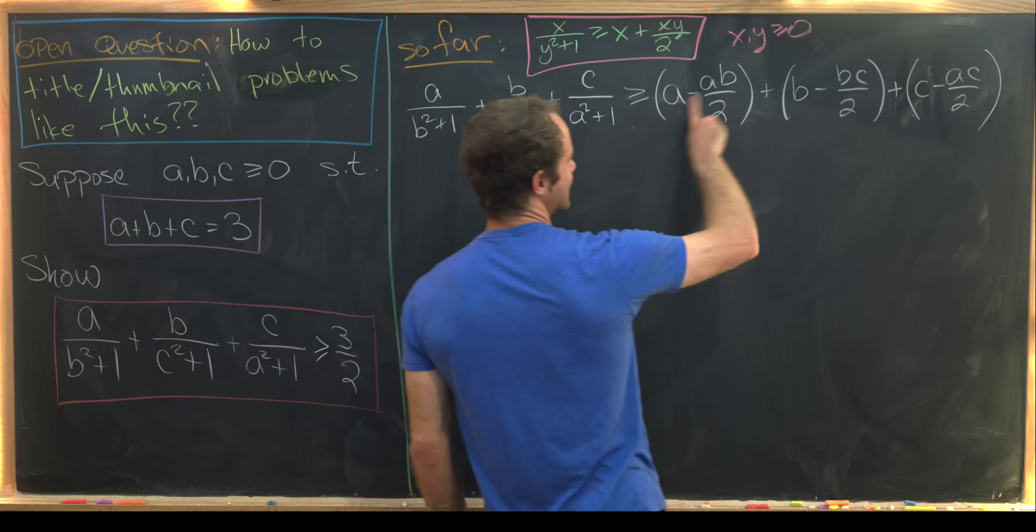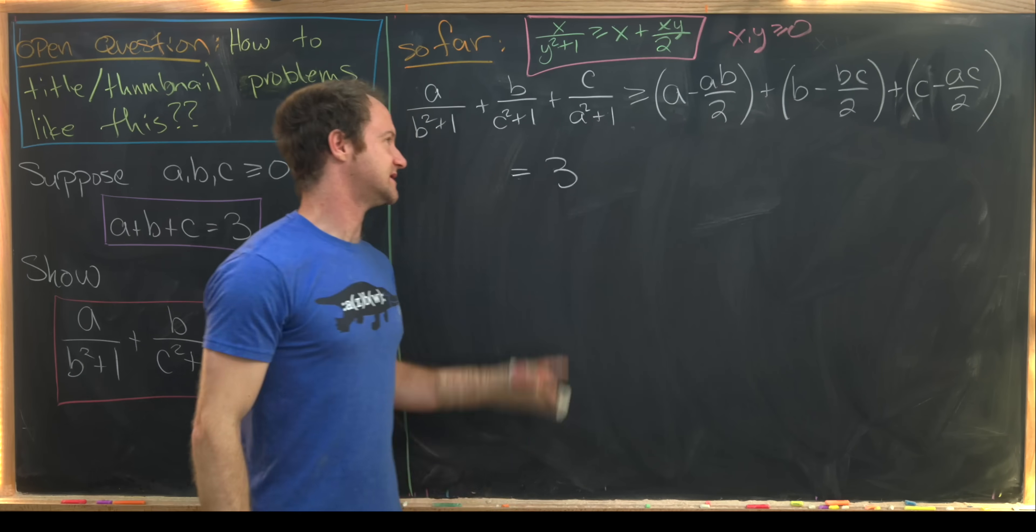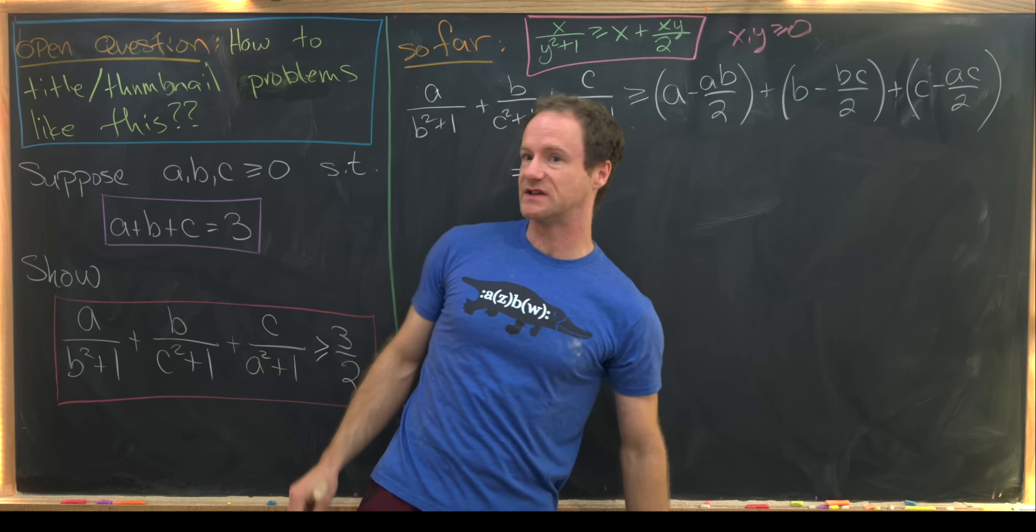So let's see. We can add this a, b, and c together and see that we get a plus b plus c. But that's our given, which is the number 3.